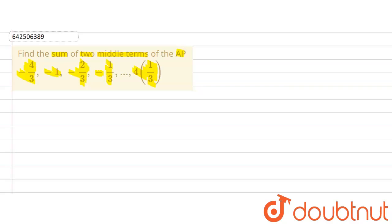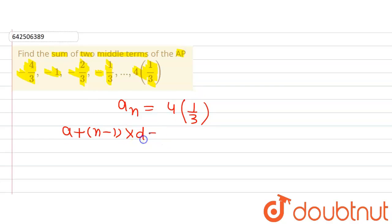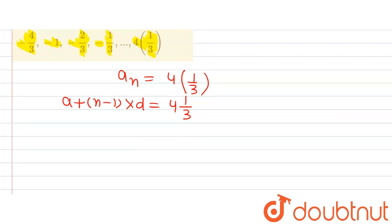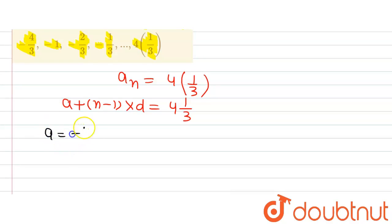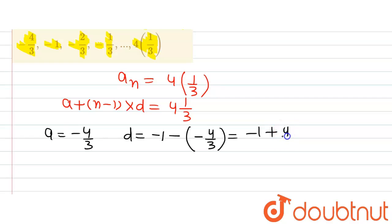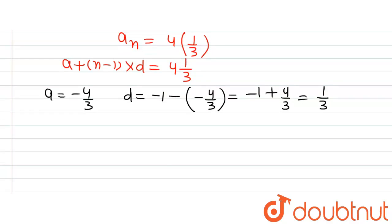Let's first find out the number of terms. From the question, the last term of the AP is 4 and 1/3, and the formula for the last term of an AP is: a plus (n minus 1) multiplied by d equals 4 and 1/3. From the given AP, the first term a is minus 4/3, and the common difference d is the second term minus 4/3 minus the first term, giving us minus 1 plus 4/3, which equals 1/3. So d equals 1/3.